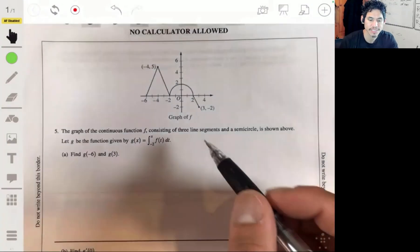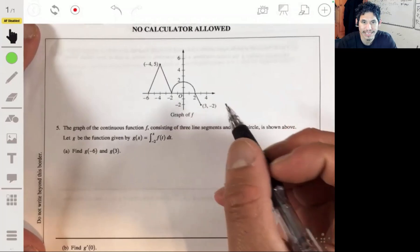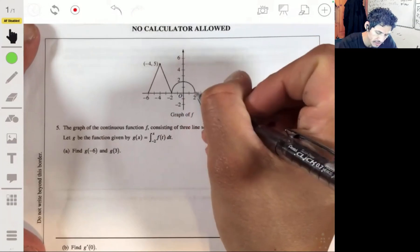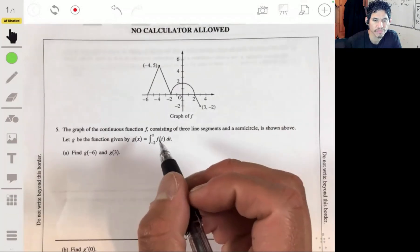All right, so problem five from the free response section of the 2013 AP Calculus practice exam. We got this graph - this is a triangle, semicircle, and a line. So we got to solve these.